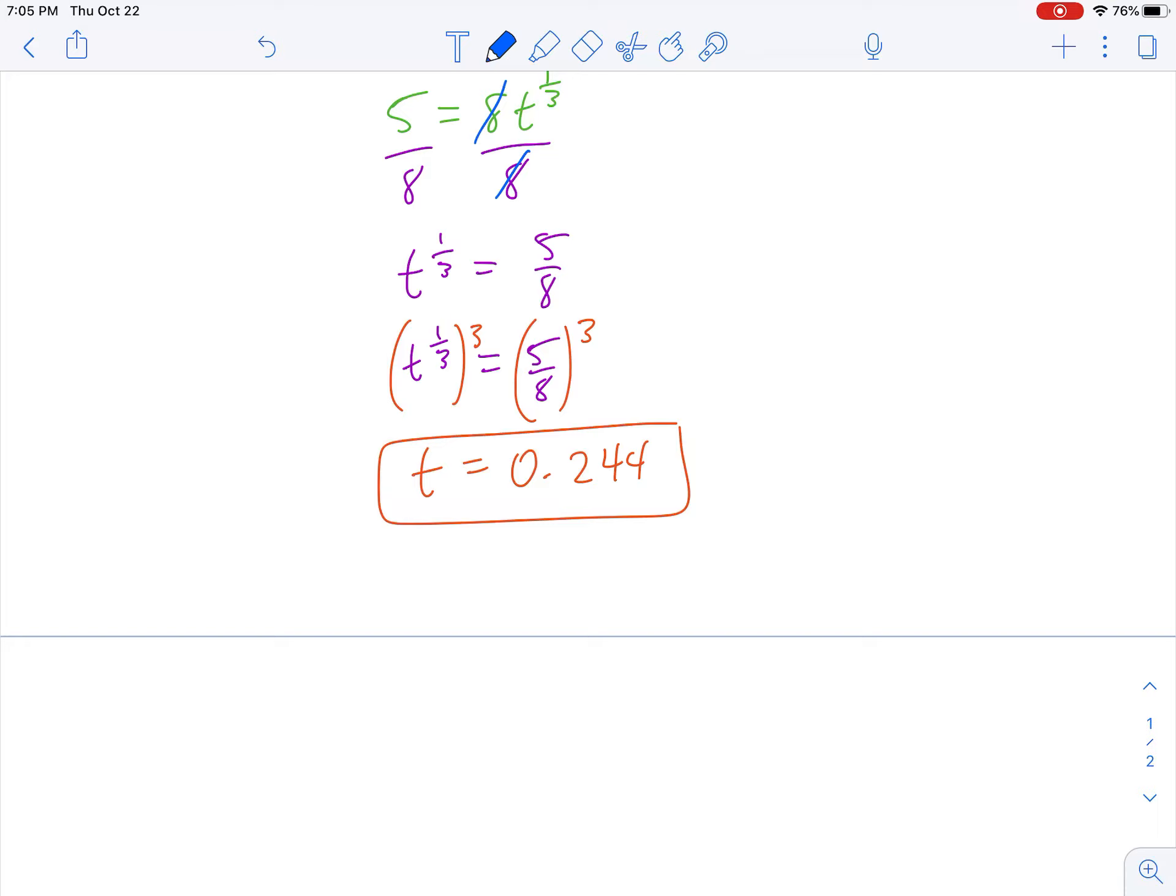And then we have t to the one-third power equals 5 over 8. To get rid of the one-third power, we need to raise both sides to the power of 3. That will get my exponent of 1 on the left, which is what we want. t is now by itself. 5 divided by 8, all raised to the third power, is 0.244.